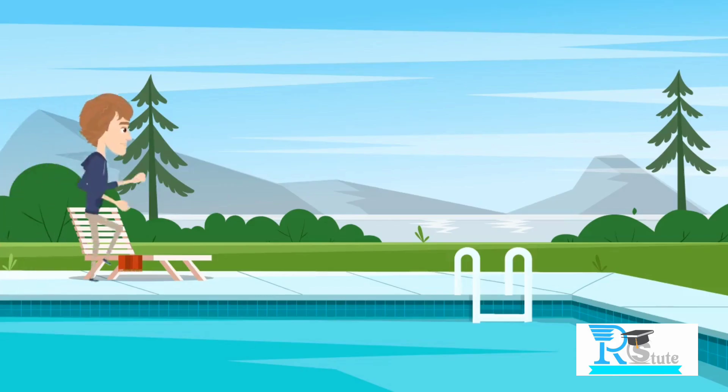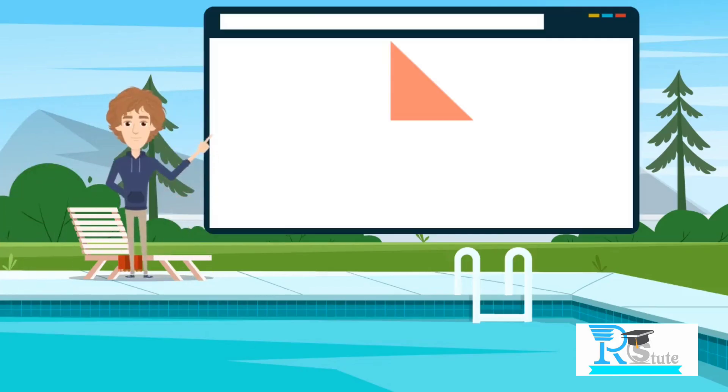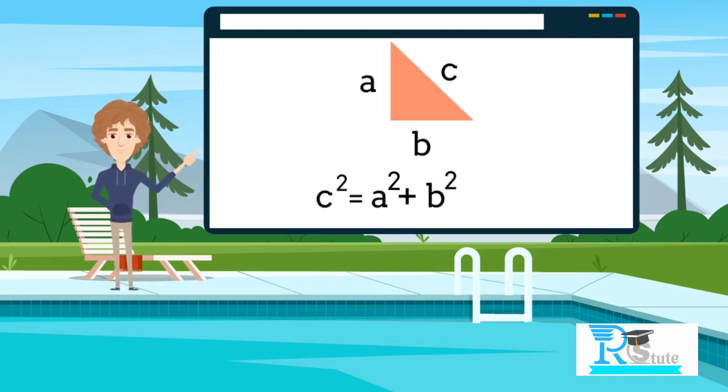For example, if we have a right angle triangle where A is the perpendicular height, B is the base, and C is the hypotenuse, then we have the formula C² = A² + B².